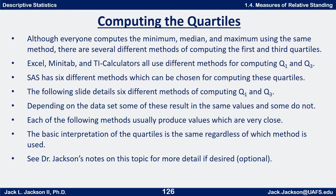One of the pioneers of this was Tukey, who used yet a fourth method different from all three. In fact, there's a statistical program called SAS that has six different methods which can be chosen for computing the quartiles. Depending on the data set, some of these result in the same values and some do not, but each method usually produces values which are very close, so the basic interpretation of the quartiles is the same regardless of which method is used.